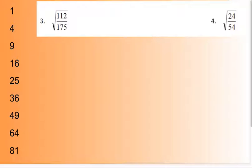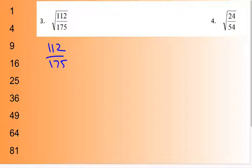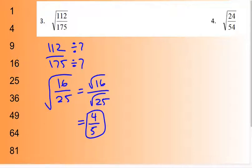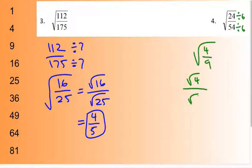For number 3 and number 4 — 112 over 175 and 24 over 54 — the first thing I tell kids to do is make it easier to deal with. For 112 over 175, divide both by 7 to get 16 over 25. Square root of 16 is 4, square root of 25 is 5, so the answer is 4/5. For 24 over 54, divide both by 6 to get 4/9. Square root of 4 over square root of 9 is 2 over 3.